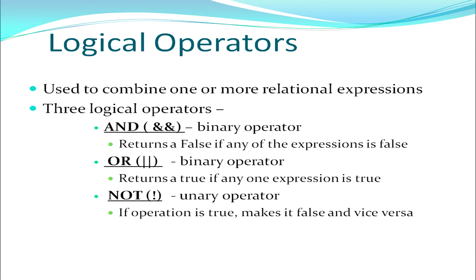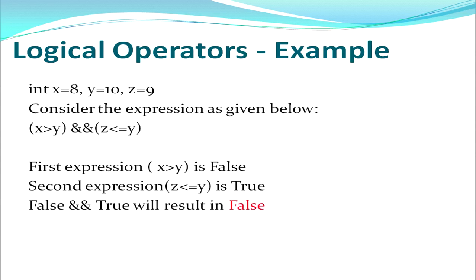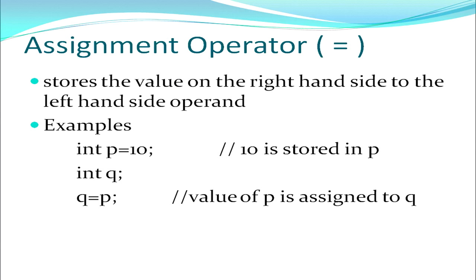The NOT operator reverses the output — if the operation is true it makes it false, and if it is false it makes it true. AND and OR are binary operators whereas NOT is a unary operator. In the example, x greater than y is false, and z less than or equal to y is true. But since both are combined by the AND operator which gives true only if both are true, and x greater than y is false, the final result will be false.